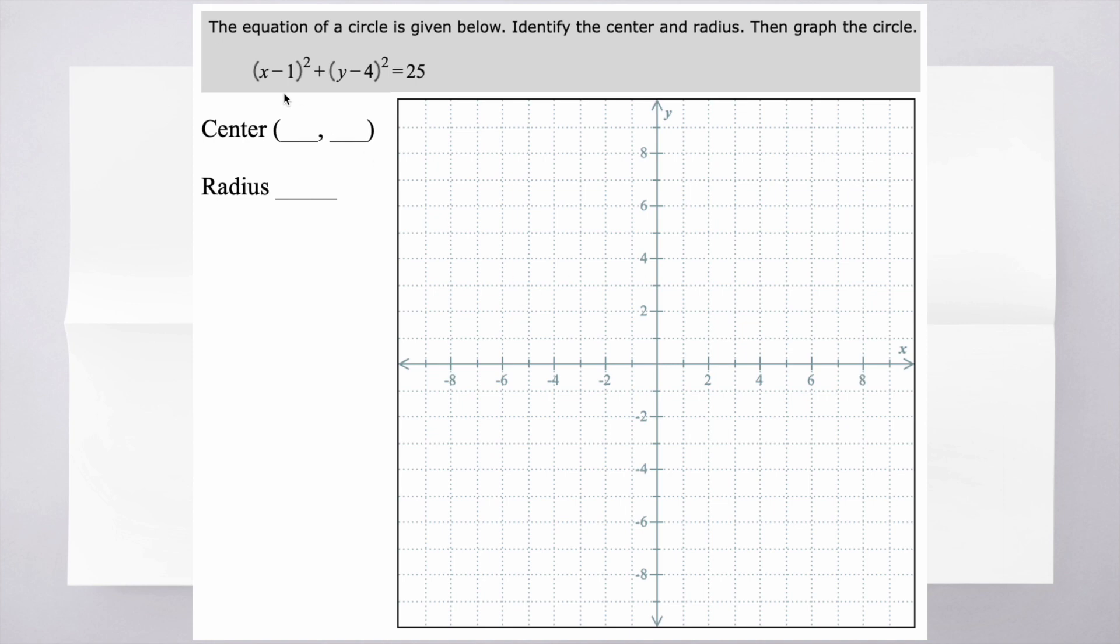If they want you to graph the circle, they're going to give you the equation. So far, I've seen them give it to you in standard form. You're going to identify the center and the radius. They do ask you to identify that separately and then graph the circle. So if I have my standard equation here, I have x minus h and y minus k. So here's my h, here's my k, and then the end is r squared.